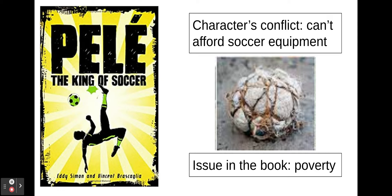For example, in the book Pelé about the famous soccer player from Brazil, Pelé comes from a very poor area of town. He loves soccer, but since he is poor, he can't afford soccer gear or fancy lessons, so he had to learn how to play with rolled-up rags that kind of looked like a ball. In this book, the character Pelé's conflict is that he can't afford soccer equipment — that is the character's specific conflict. However, the issue in the book, the big problem that society has, is poverty. Pelé's specific conflict is a result of the poverty. The issue can be related to a character's specific conflict, but it is not the exact same thing.